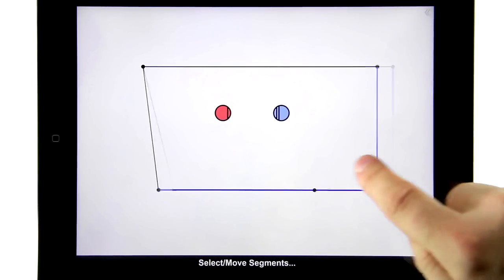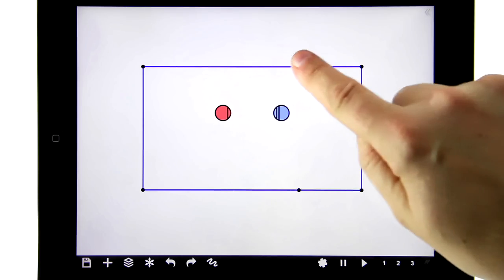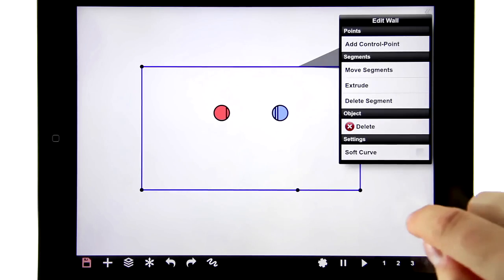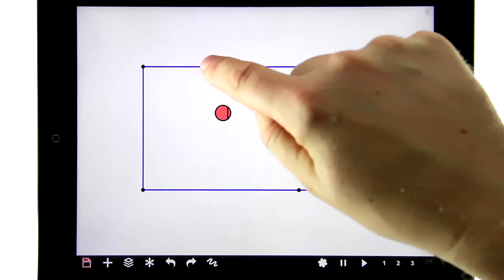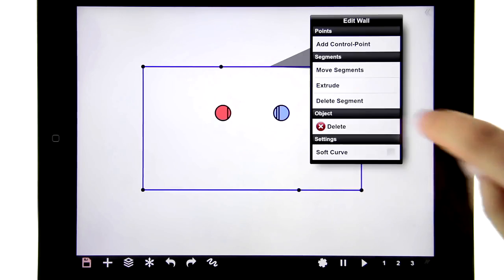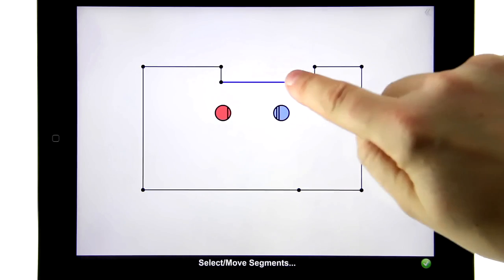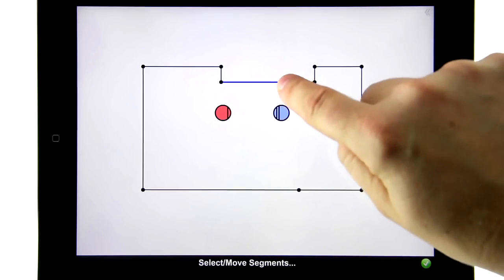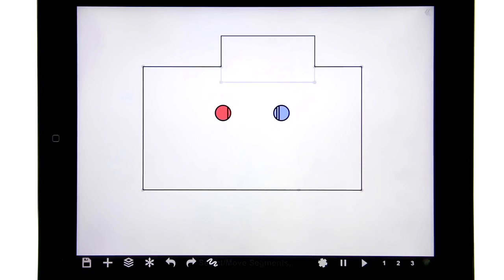Next we have extrude. In order to explain how that works, I'm gonna add two control points up here—one here and one here. Then we're gonna select extrude, and that pulls out an extra piece of wall that I can then position anywhere.